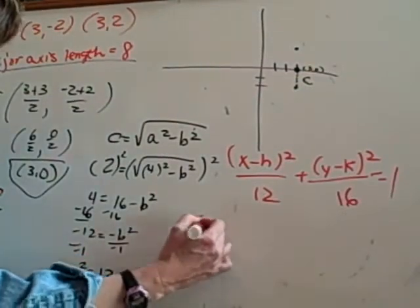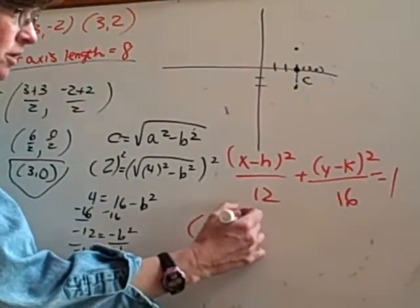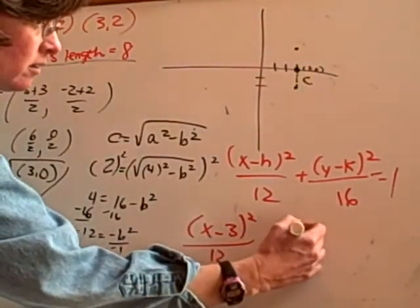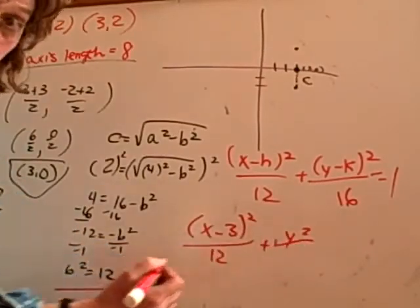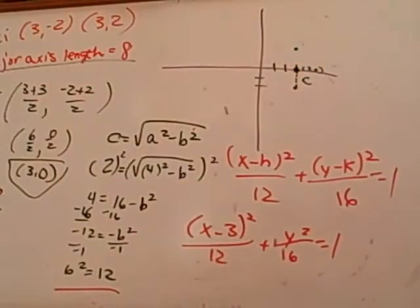So it's going to be X. What was my center? 3? Minus 3 quantity squared all over 12 plus Y. I can just write Y squared, right? Because it was 0. Y squared over 16 equals 1. And there you go. Cool, huh? Mm-hmm. Sweet.